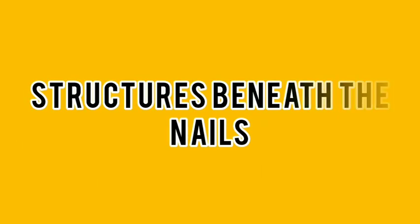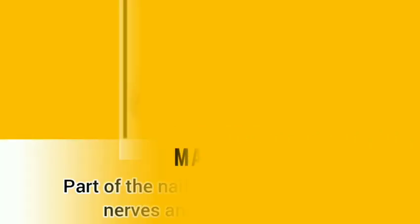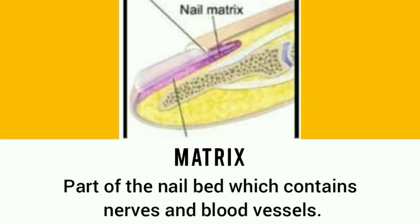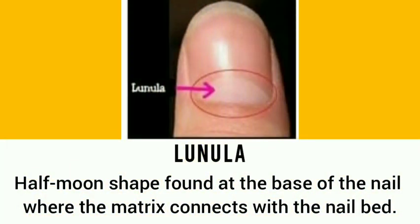Structures beneath the nails: the nail bed is the skin upon which the nail body or nail plate rests. The matrix is the part of the nail bed which contains nerves and blood vessels. The lunula is the half-moon shape found at the base of the nail where the matrix connects with the nail bed.